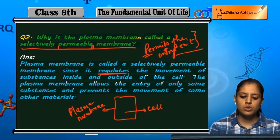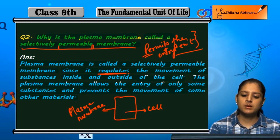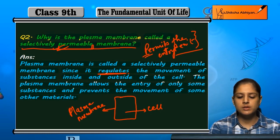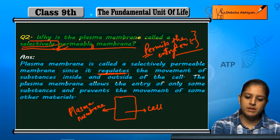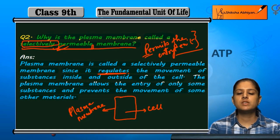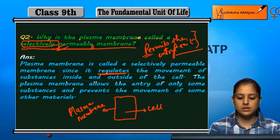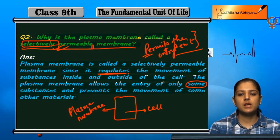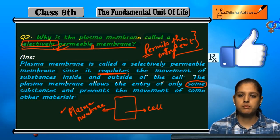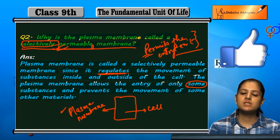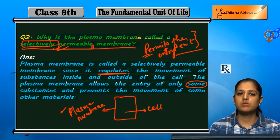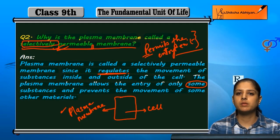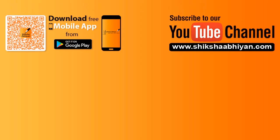There are some substances only whose movement is allowed by the plasma membrane — both into and out of the cell. Because it selectively allows movement of certain substances, it is called a selectively permeable membrane.